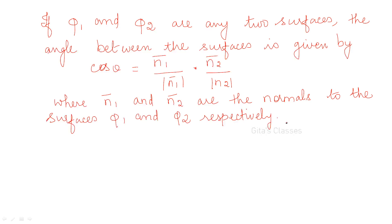Now let us see the angle between the surfaces. If phi1 and phi2 are any two surfaces, the angle between the surfaces is given by cos theta equals n1-bar over modulus of n1, dot n2-bar over modulus of n2, where n1-bar and n2-bar are the normals to the surfaces phi1 and phi2 respectively. You can expect one definite question from this.